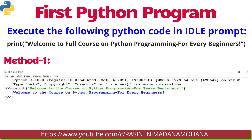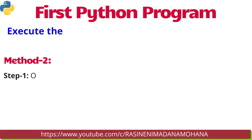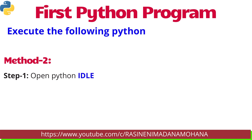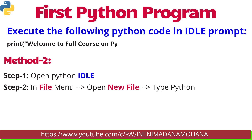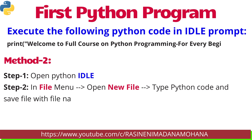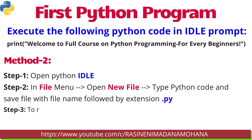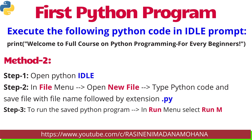This is Method 1 — how to execute the first Python program in IDLE. Coming to Method 2: first we open Python IDLE as usual. Then in the File menu we can select New File. Then a shell script editor is displayed where you have to type the Python code.